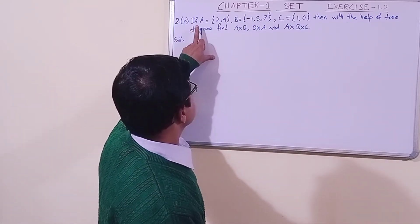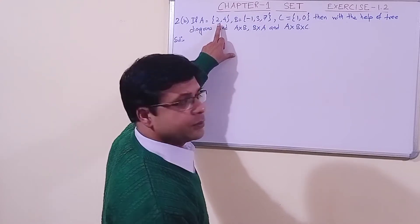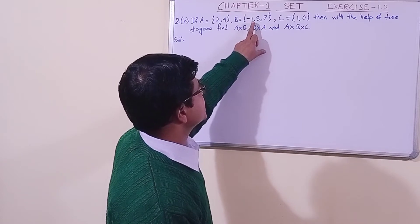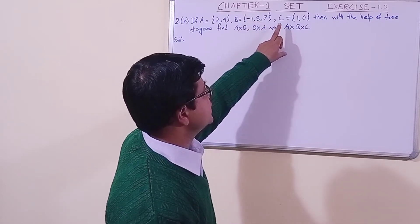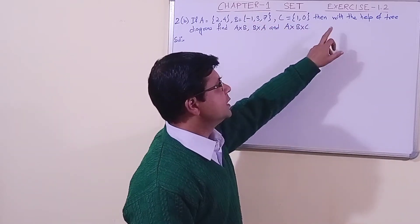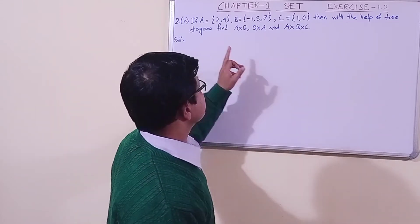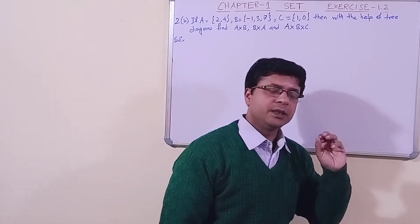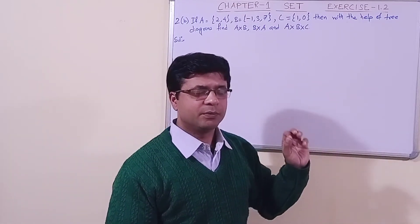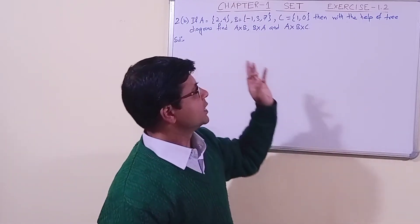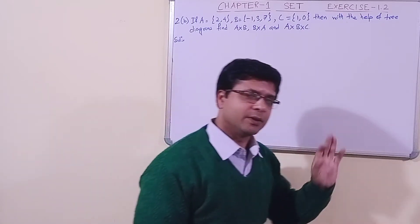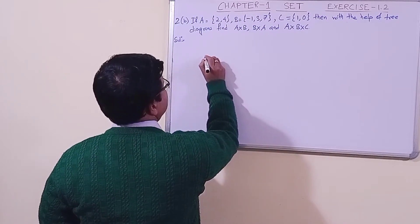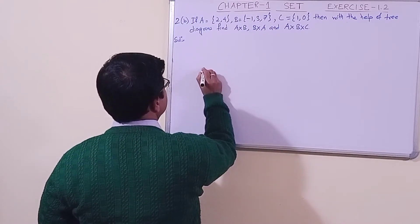In question 2b, set A has two elements {2, 4} and set B has three elements {-1, 3, 7}. With the help of tree diagrams, find A cross B, B cross A, and A cross B cross C. The advantage of using a tree diagram is that the Cartesian product is always going to be correct — you can check it. So let us make the tree diagram. This is set A with two elements.